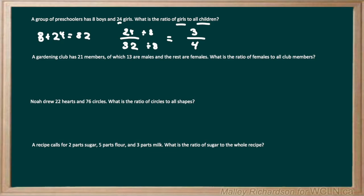Moving on to question 2, we have a gardening club that has 21 members — 13 are male and the rest are female. We need to find the ratio of females to all club members. Our part is going to be our females and our whole is going to be all club members. We need to find our part because we're only given the number of members and the number of males.